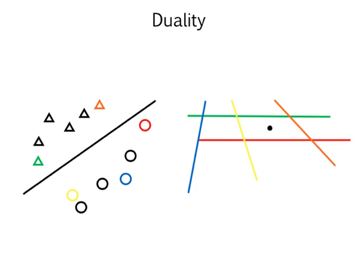Before we can move on, we should recall the notion of duality in SVMs. Normally when we think of a classification problem, we treat the data points in the feature space as points in the feature space, and we treat the weight vector as a hyperplane — well, the weight vector is normal to the hyperplane, but we draw the hyperplane in the feature space because it shows the classification between the two sets of data points. The dual form of this is that we can actually treat the weight vector as a point in a different space, and each of the transformed data points in our feature space are now represented by hyperplanes.